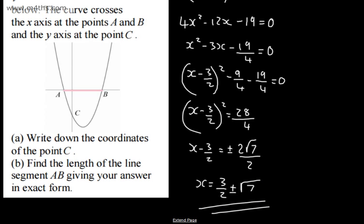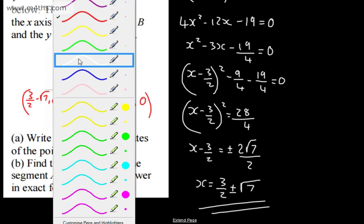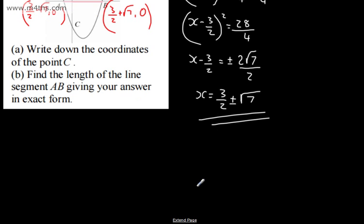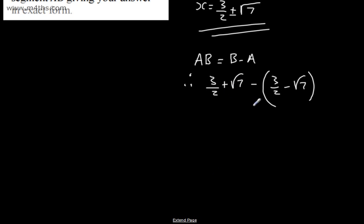If we go here, we can put these values on. All I've done is solve the quadratic. Point A is going to be 3/2 - √7, 0, and point B will be 3/2 + √7, 0. So all we're doing is simply subtracting these away. If you want to show workings, AB is B minus A. So AB = 3/2 + √7 - (3/2 - √7). As we can see, the 3/2 will cancel. We'll have √7 subtract negative √7, which will give me 2√7 units.